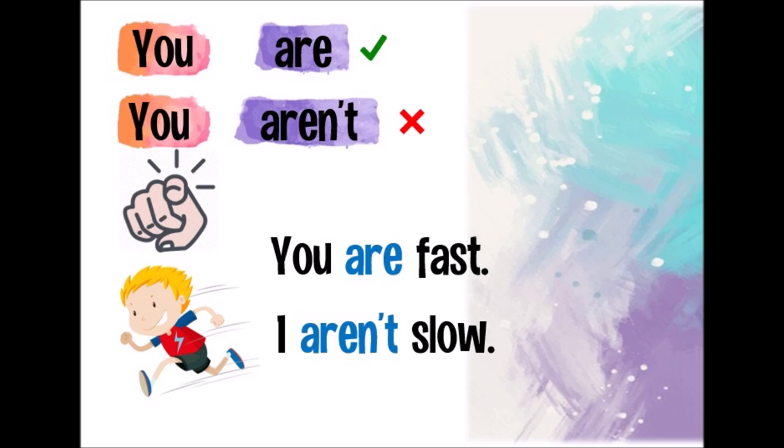Si estamos hablándole a otra persona, decimos tú. In English, we say you. You are or you aren't. For example, you are fast. You are fast. Or, you aren't slow. You aren't slow.